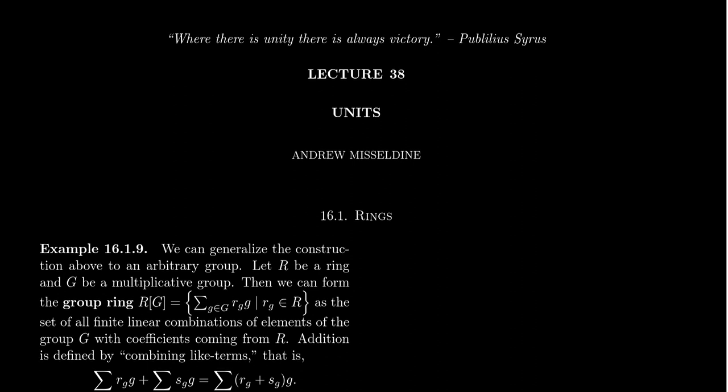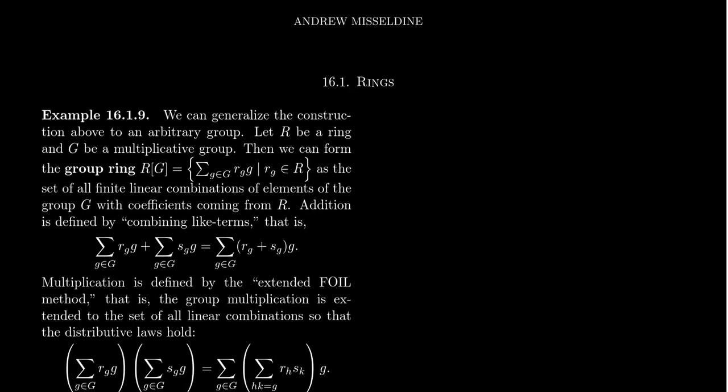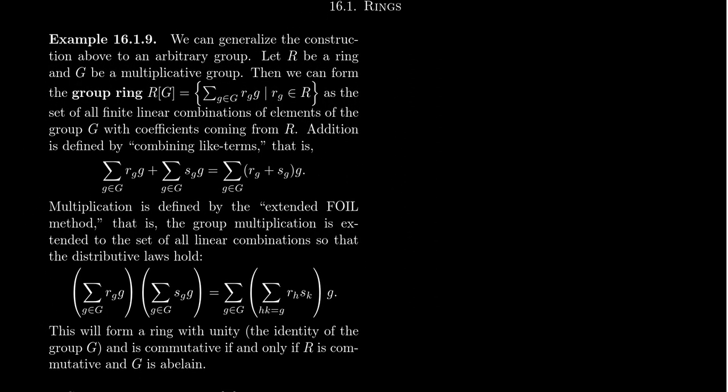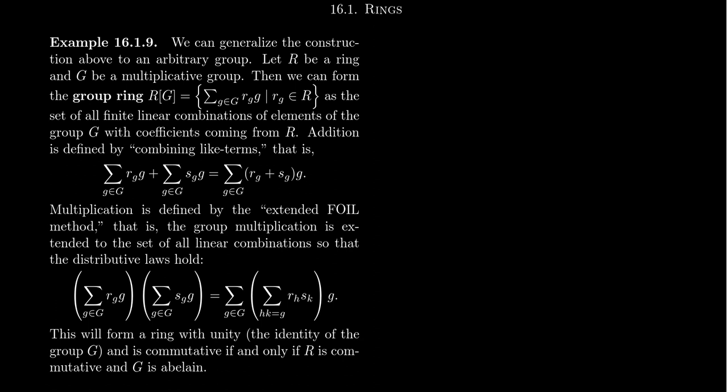In this video, I want to talk about the idea of a group ring, which essentially generalizes the idea of a polynomial ring, which we introduced in the last video. With polynomials, we learned that because of the distributive property, there's really only one way that you can multiply together polynomials — basically by the usual FOIL method.